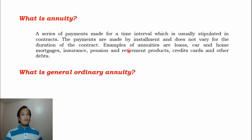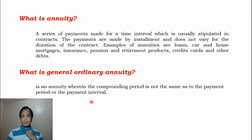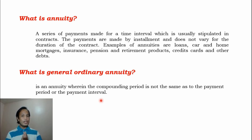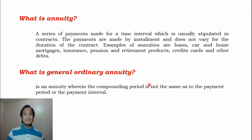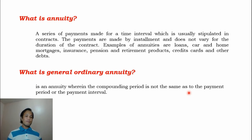When we say general ordinary annuity, it is an annuity where the compounding period is not the same as the payment period or the payment interval. Unlike with a simple ordinary annuity, the compounding period is the same or equal to the payment period. But for the general ordinary annuity, the compounding period is not the same as the payment period or payment interval. I will be presenting to you some examples about that.